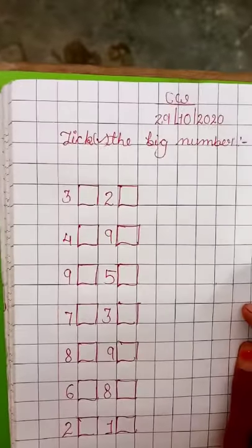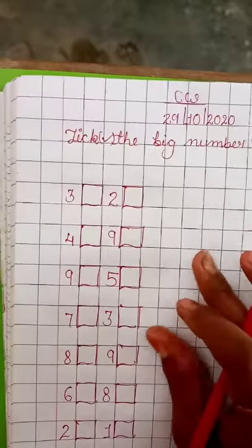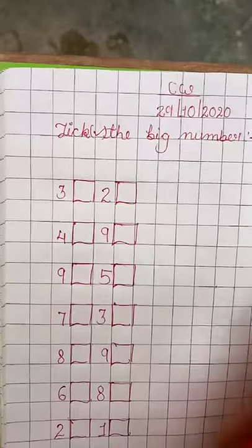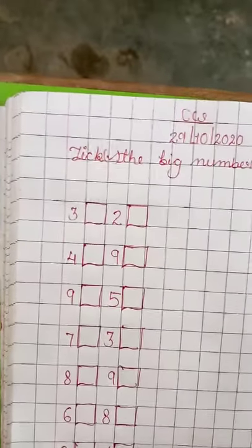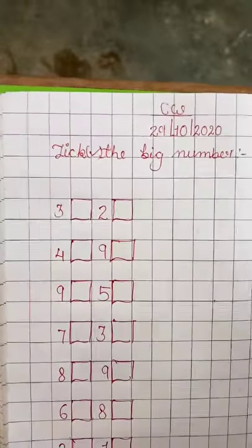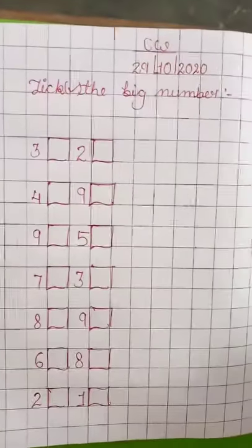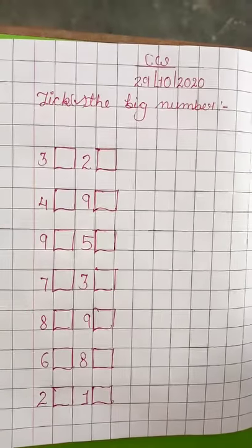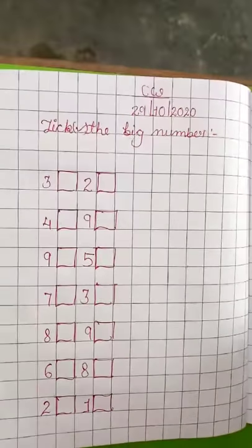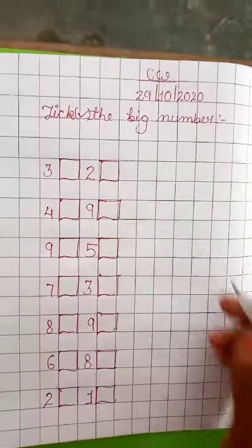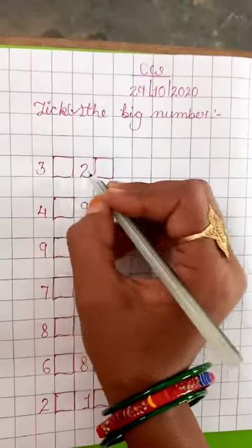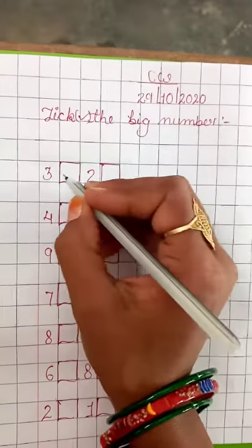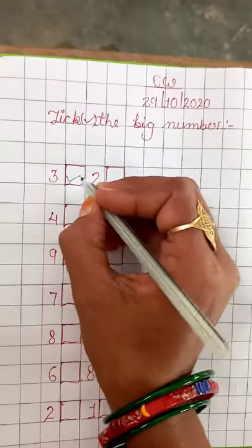Children, you will identify which is the big number and which is the small number. We will tick the big numbers. This is very easy, but this question will come in your exam. You will write this in your CW copy and prepare. This is your activity book question. Pay attention. So, three and two, which is big and which is small? Three is the big number, we will tick three. Four and nine, which is big? Nine is big, four is small, we will tick nine.